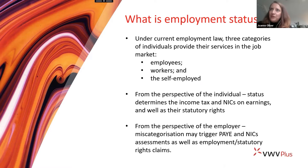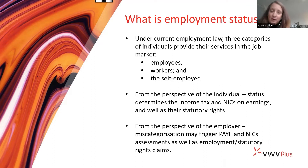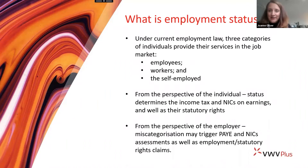In terms of how we look at employment status, the lines can often be quite blurry between the different categories. For example, you might have an individual engaged as a worker under a zero-hours contract with no guaranteed hours. Over time that arrangement evolves — they start working a set pattern, regular hours, become more integrated into the business and take on supervisory responsibilities, but their contract's never been updated. The nature of the relationship has changed, and with that change in practice may come a change in employment status from worker to employee.